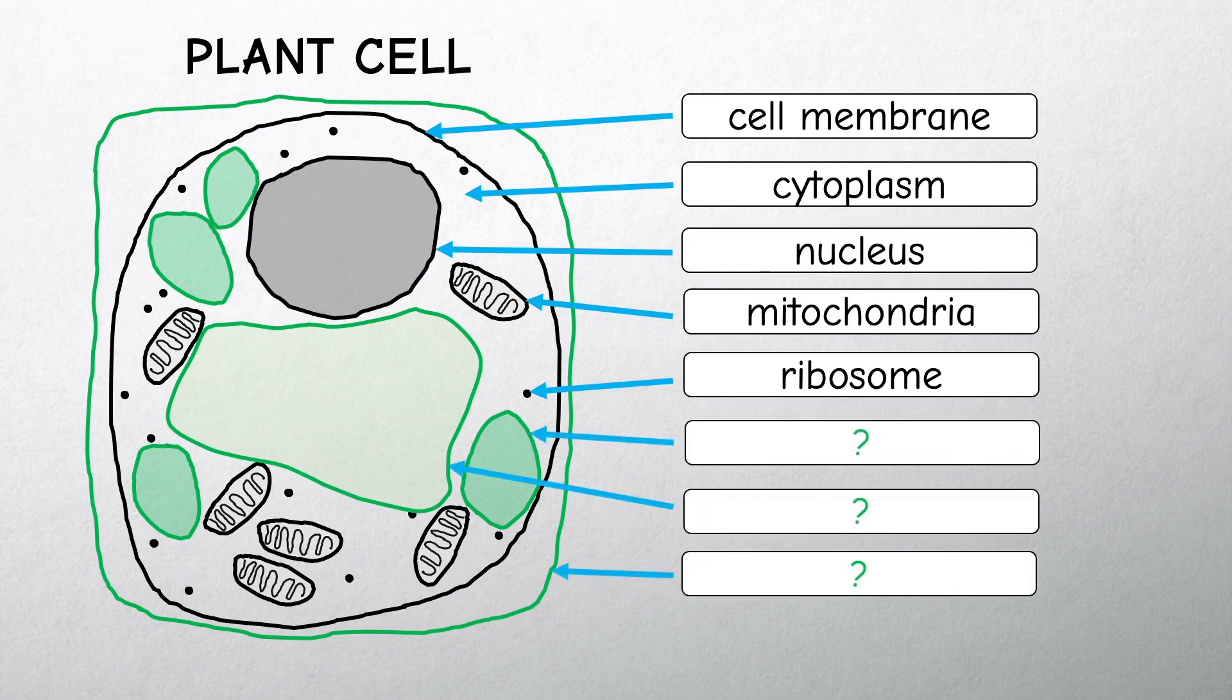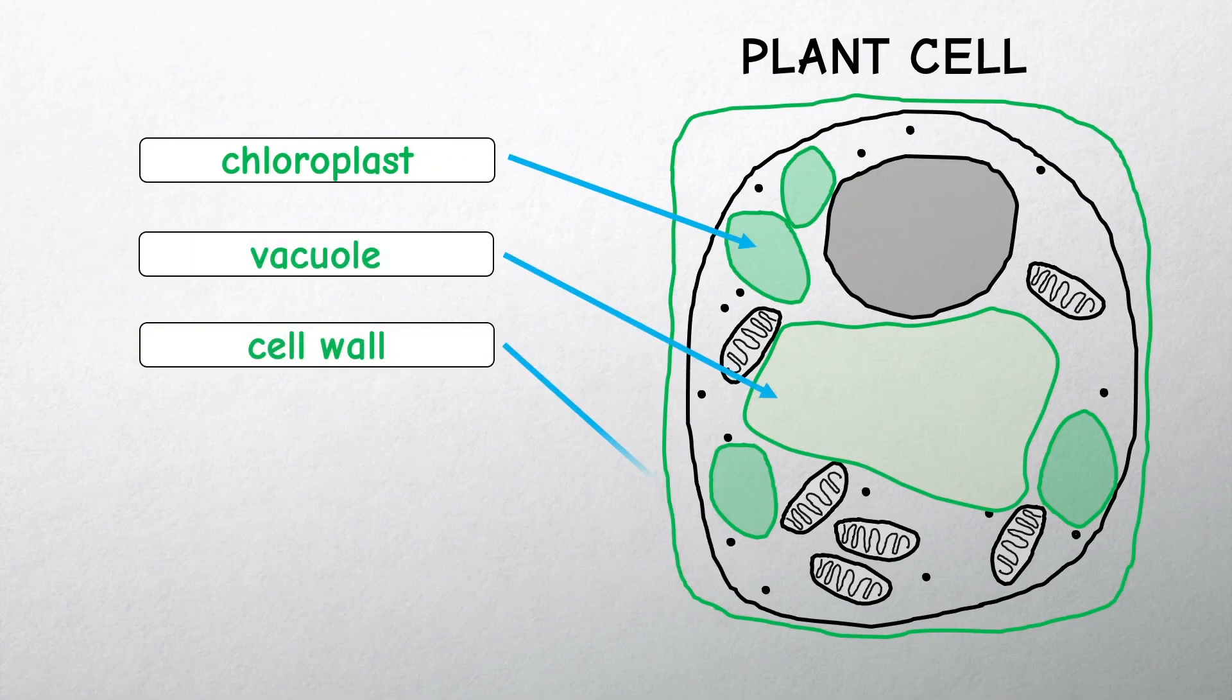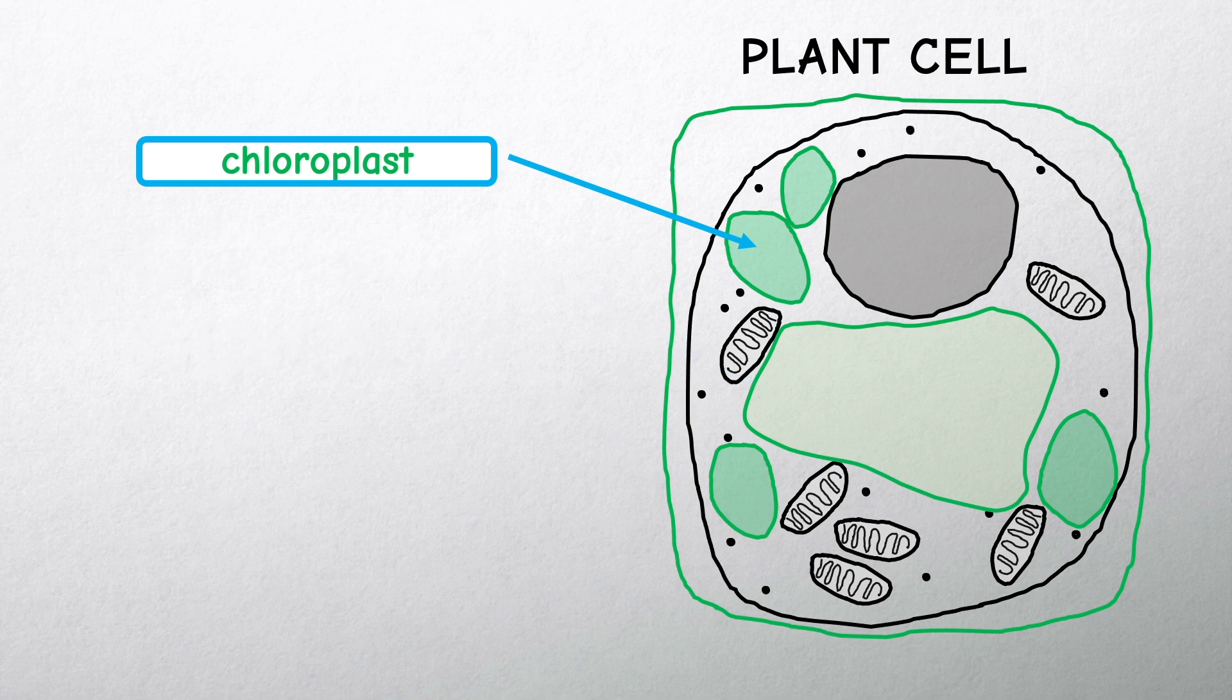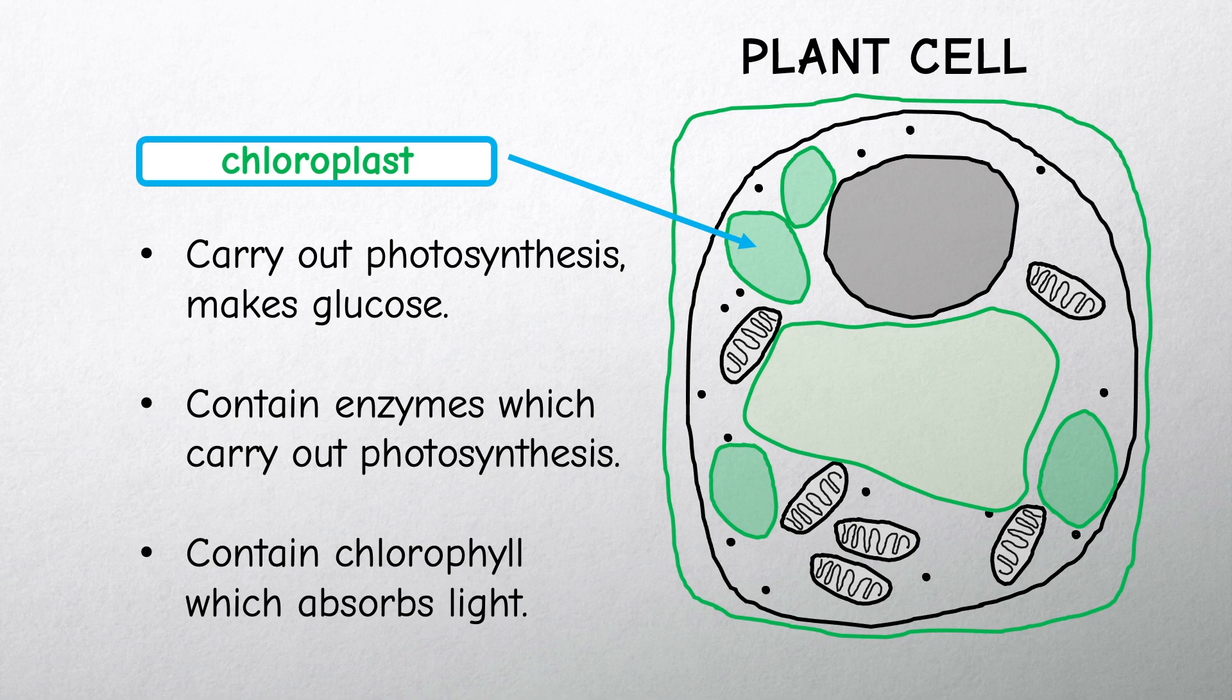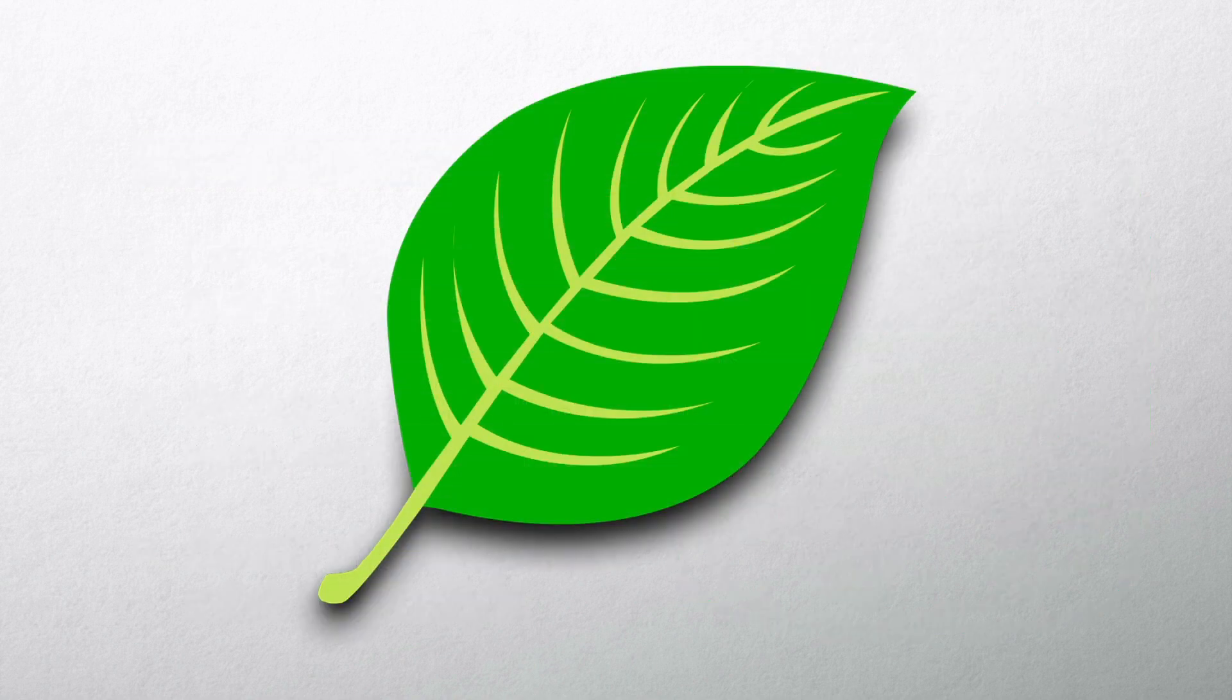They also have a few extra parts that animal cells don't have. Plant cells contain chloroplasts. This is where photosynthesis happens, which makes the food or glucose for the plant. The chloroplasts contain enzymes which carry out photosynthesis and a coloured pigment called chlorophyll, which absorbs light and gives plants their colour.